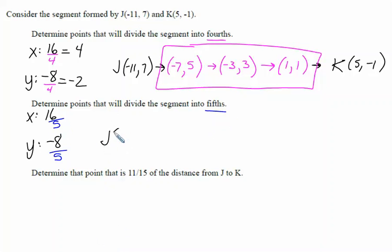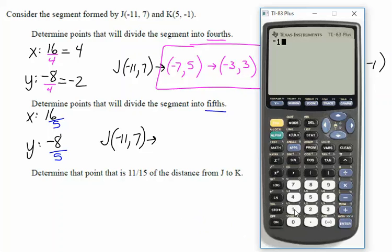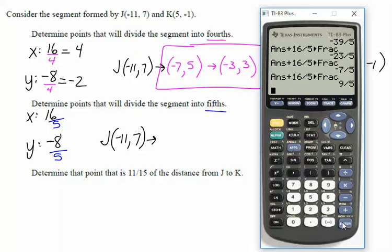We're going to take the point J at negative 11 comma 7. And now we're going to add those numbers. Take the value of x, which was negative 11, and add 16 fifths to it. Hit math, convert into a fraction. Then we're just going to keep adding the 16 fifths, converting it into a fraction. You can hit second enter to take the previous answer and add 16 fifths.